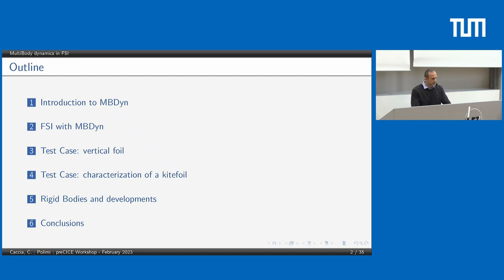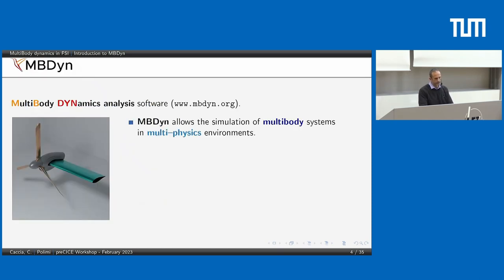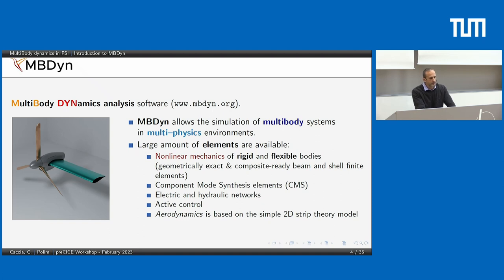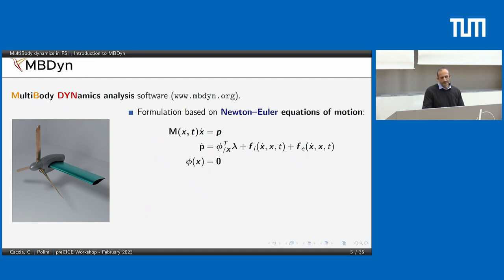This is the outline of my presentation. First I'll give a quick introduction to MBDyn and what it does, then we'll see some applications studied over the last year. MBDyn stands for multi-body dynamics analysis software, mainly developed at Politecnico di Milano. It is a framework to study multi-body systems in a multi-physics environment, with a large amount of elements from rigid bodies to flexible bodies like beams, shells, and component mode synthesis elements. You can also add electronic and hydraulic subnetworks, control systems, and analyze aerodynamics directly in MBDyn using simple 2D strip theory models.